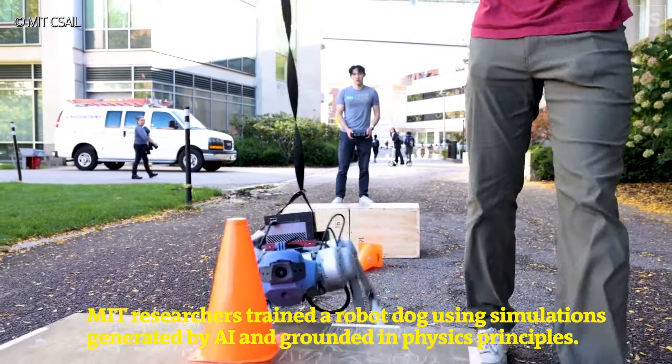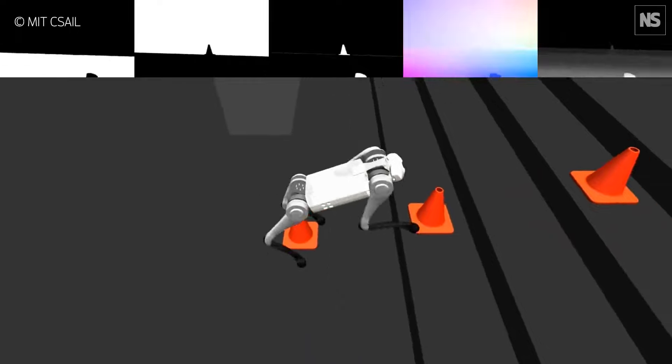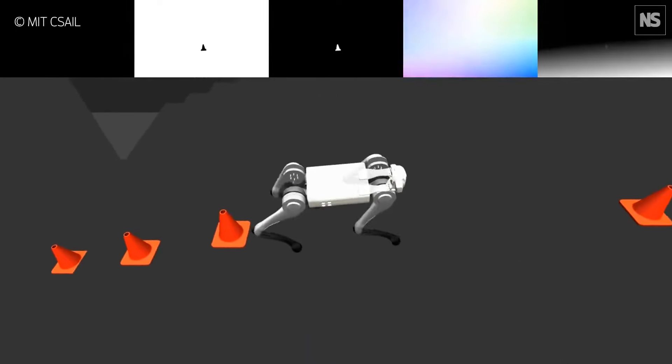The type of data robot learning needs has to be a lot more flexible and it has to contain real physics so a robot knows how to interact with the world.